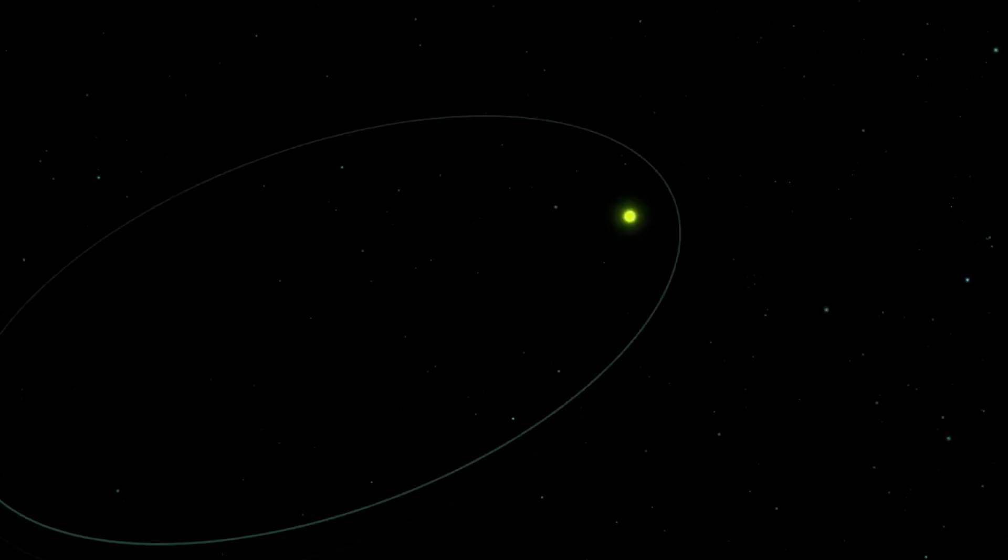During its orbit around the Sun, there are times when the Earth gets closer to it, reaching approximately 147 million kilometers. This point is called perihelion. At other times, the distance increases to about 152 million kilometers, which we call aphelion.